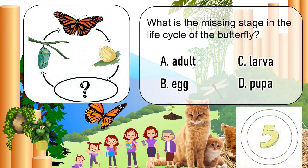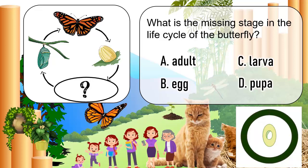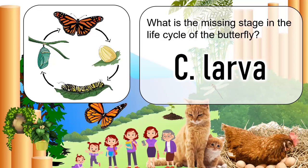What is the missing stage in the life cycle of the butterfly? A. Adult, B. Egg, C. Larva, D. Pupa. The correct answer is C. Larva.